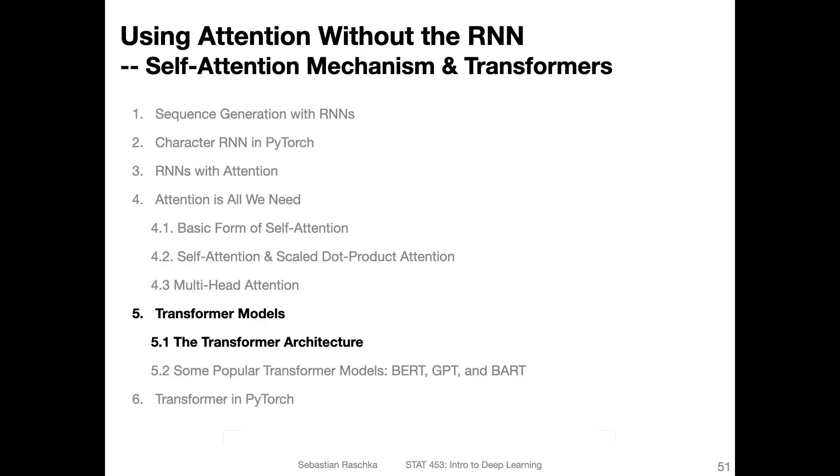And this is it for multi-head attention. Pretty simple concept. It's essentially just applying the scaled dot product attention mechanism multiple times in parallel, concatenating the results, putting it through another fully connected layer. So now we have talked about all these concepts, but we haven't learned yet how they fit together into a model. And this is the transformer model, which will be the topic of the next video.